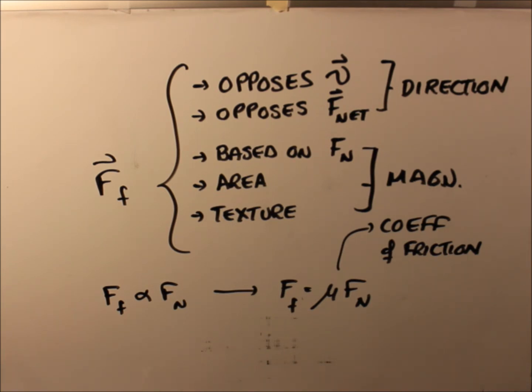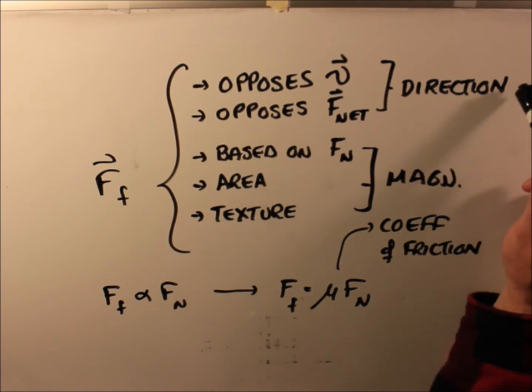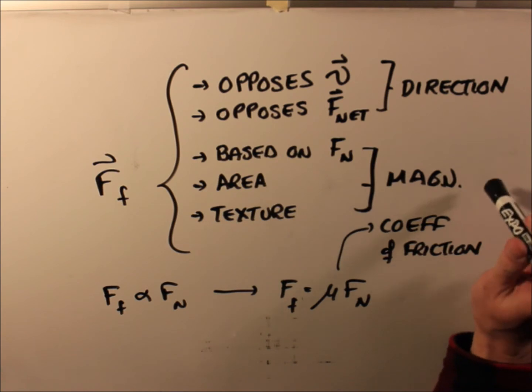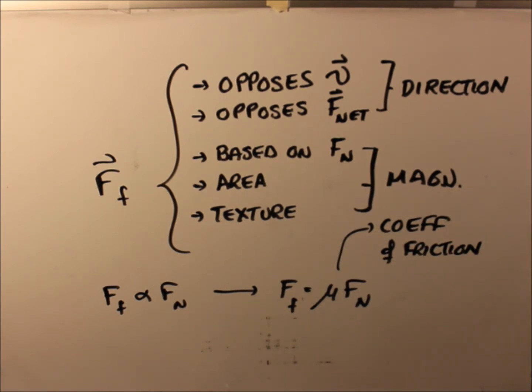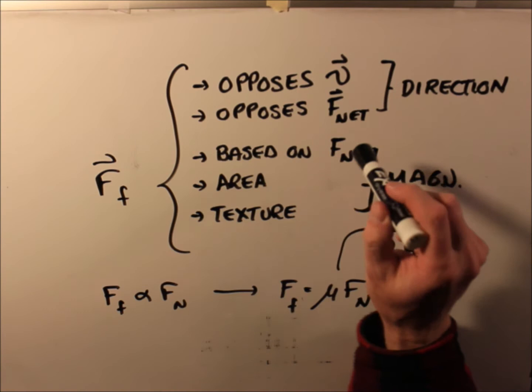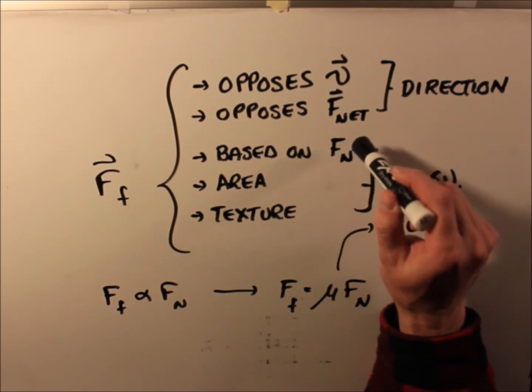Now the magnitude is a different thing. So we calculate friction, the direction is generally inferred. And then we calculate the magnitude based on these three relationships. First, we show that the normal force, the force of how we're pushing the two surfaces together, is directly proportional. So if we push twice as hard, everything else being kept the same, we get twice as much friction. If we push half as hard, we get half as much friction, and so on. It's a linear relationship.